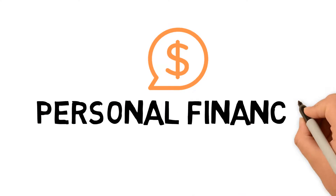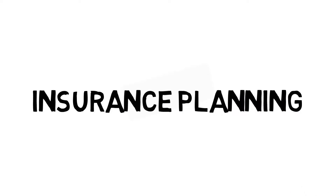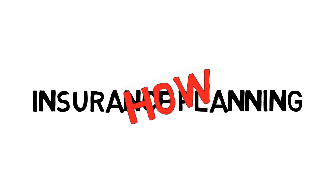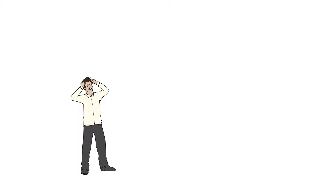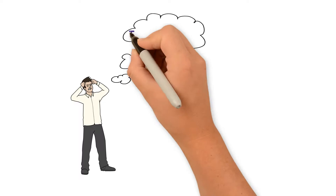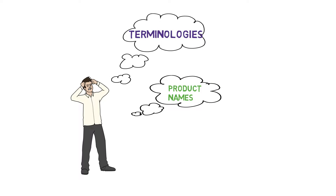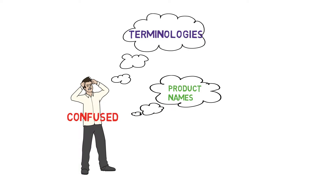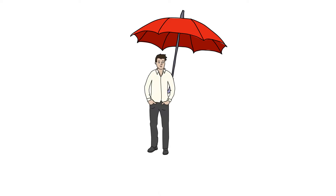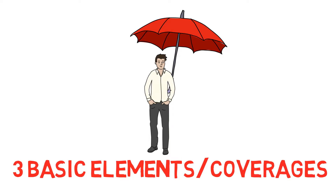Welcome to Personal Finance with Ash. For today's video, I'm going to talk about insurance planning — essentially, how to plan for your insurance. Most people find it difficult to understand insurance due to terminologies and product names which most of the time don't explain anything. All this only adds to the confusion faced by consumers, but it doesn't have to be that way. Here, I summarise three basic elements or coverages that you need to know when you plan to get insured.